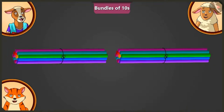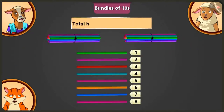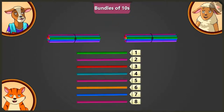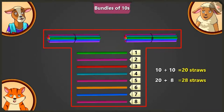Eight straws are placed next to both bundles. Billy is asked how many straws there are in total. Adding ten straws to ten straws makes twenty, and adding eight to twenty straws, there are twenty-eight straws in total.